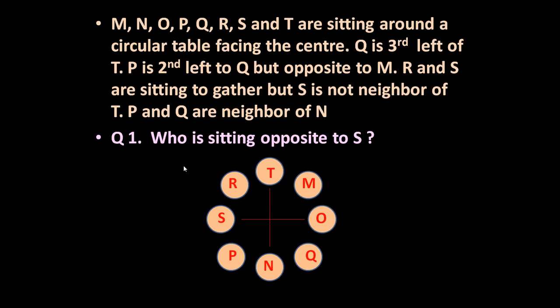Now you can answer any question. The question given here is: who is sitting opposite to S? Certainly it is O — O is sitting opposite to S. If asked who is sitting opposite to Q, certainly it is R. And who are the neighbors of P? S and N. You can answer any number of questions based on this tabular information. It is very simple to answer any question once you have this format of the table.